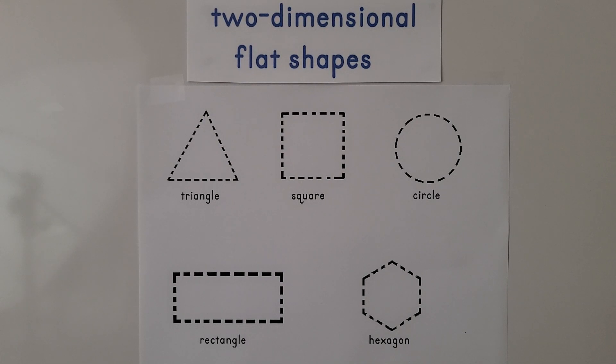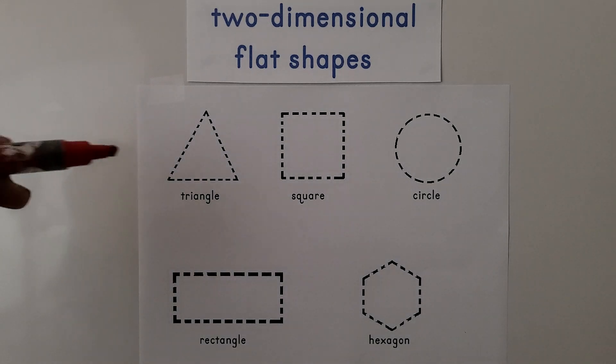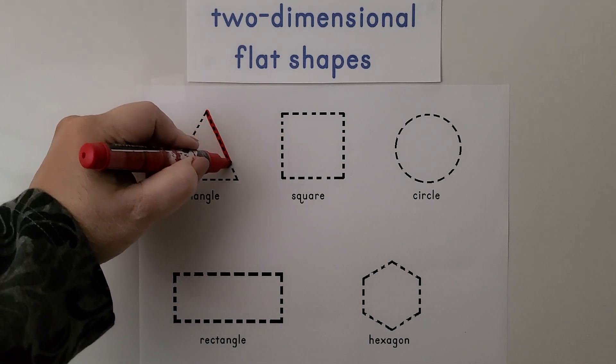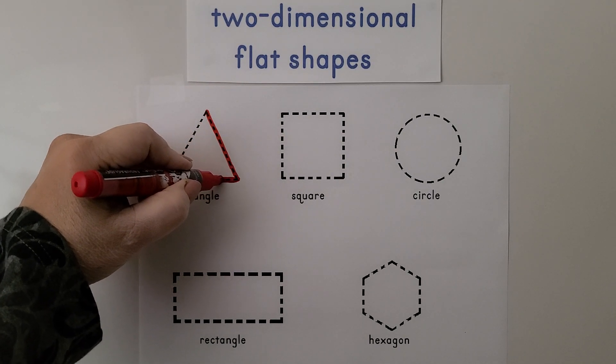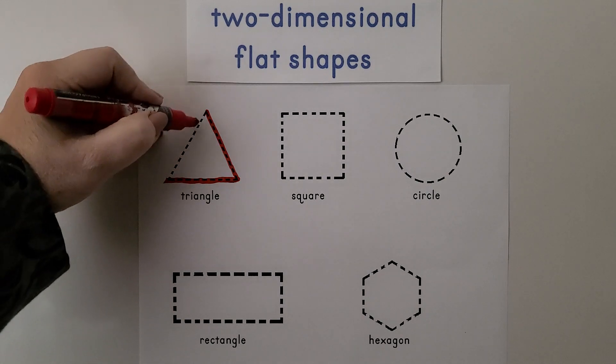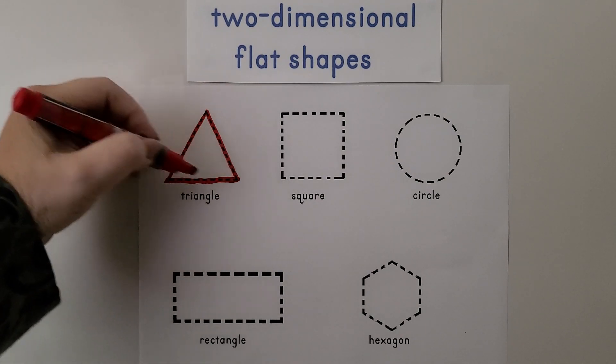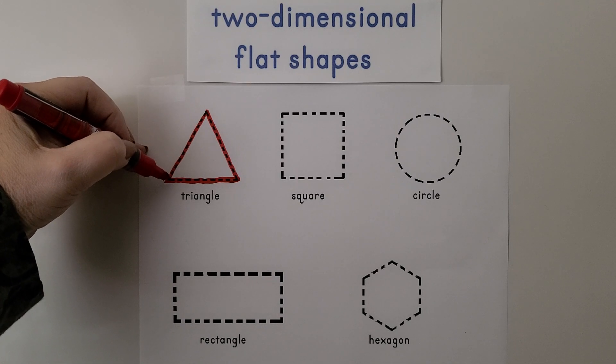We've learned that two-dimensional shapes are flat shapes. This is a triangle. We can trace the triangle. We have one side, two sides, three sides, and one, two, three corners. That's three vertices.